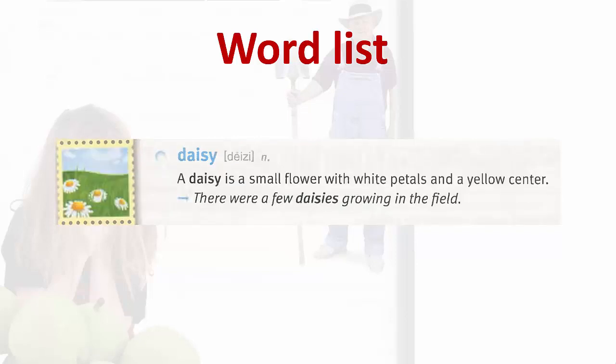Daisy. A daisy is a small flower with white petals and a yellow center. There were a few daisies growing in the field.